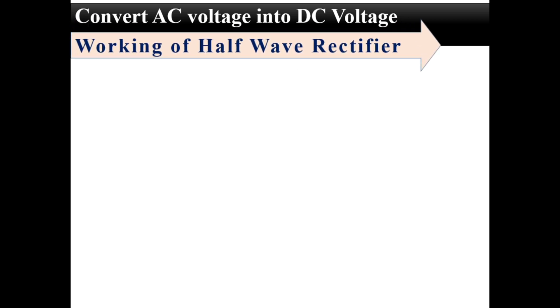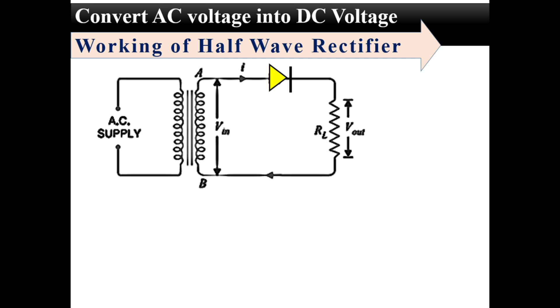First let's consider the half wave rectifier. This is a simple circuit diagram of a half wave rectifier. Now let's see the process of how a half wave rectifier converts AC voltage to DC voltage. First, a high voltage AC supply is given to the primary of a step-down transformer.